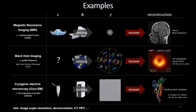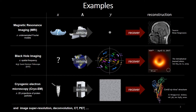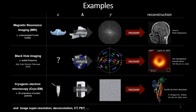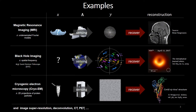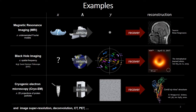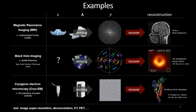Inverse problems are ubiquitous in science and engineering. Many problems in scientific imaging and beyond can be formulated as inverse problems. Here is a table with some applications. What we care about is recovering x from y. For example, we want to recover brain images from the k-space measurements generated by an MR scanner, recover the black hole image from its spatial frequency data collected by telescopes, and recover the structure of coronaviruses from its 2D projections generated by cryo-EM.